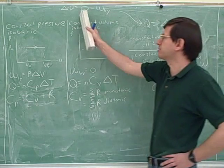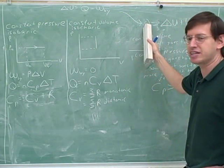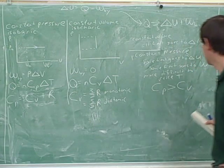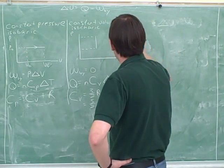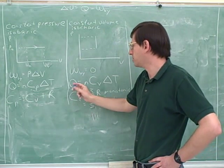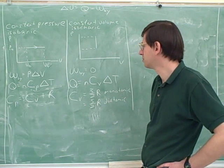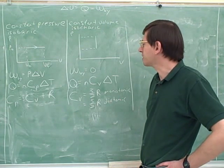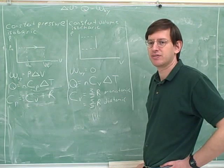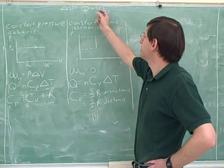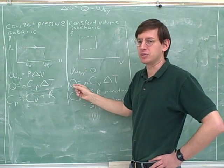The first law of thermodynamics is really just common sense — it's bookkeeping about where energy goes. If energy comes in as heat, it either changes the temperature or moves the piston. We have equations for work and for heat, and we can use the first law to find delta U. For a constant volume process specifically, since work is zero, delta U equals Q — so the heat formula also directly gives us the delta U.